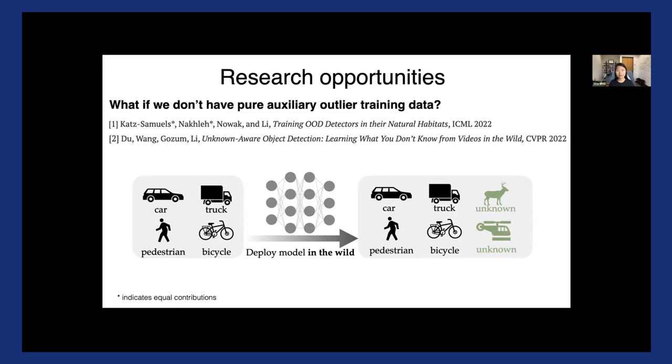And so at a high level, this wild data can offer several advantages. For example, it better match this true test time distribution than using data collected offline, such as web crowd images. And secondly, this approach doesn't require manual data collection and it can be available. You can get a lot of data in abundance.